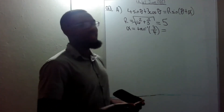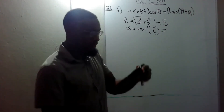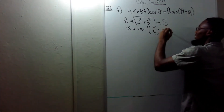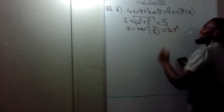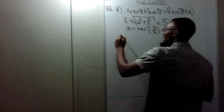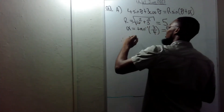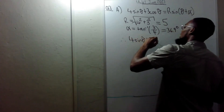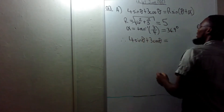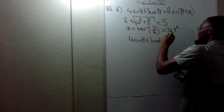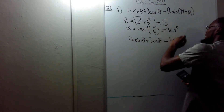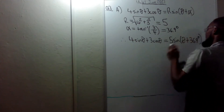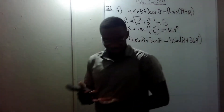I'm going to keep it in degrees, so α = 36.9°. Therefore, 4sinθ + 3cosθ = 5·sin(θ + 36.9°). They give 5 marks for that.